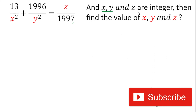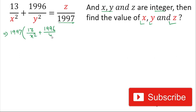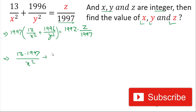For solving these equations, we'll multiply both sides by 1997. On the left hand side that is 13 divided by x² plus 1996 divided by y², and that is equal to 1997 multiplied by z divided by 1997. We'll simplify it: 13 multiplied by 1997 divided by x², plus 1996 multiplied by 1997 divided by y². The numerator and denominator cancel, so that is equal to z.